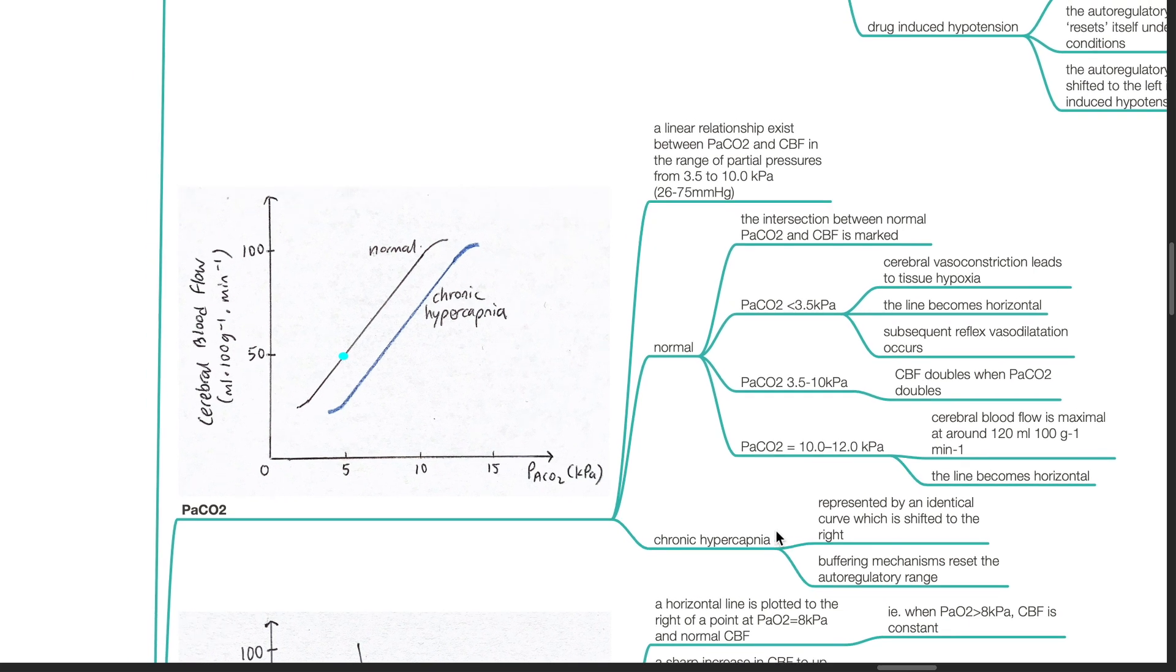PaCO2. A linear relationship exists between PaCO2 and CBF in the range of partial pressures from 3.5 to 10 kPa or 26 to 75 mmHg. The normal curve.